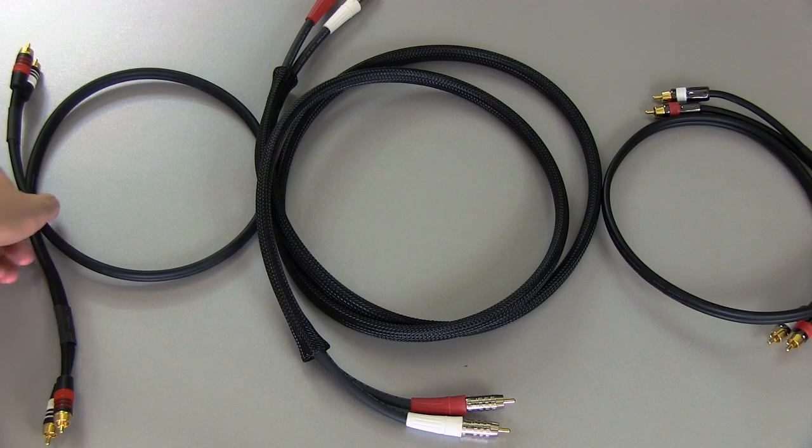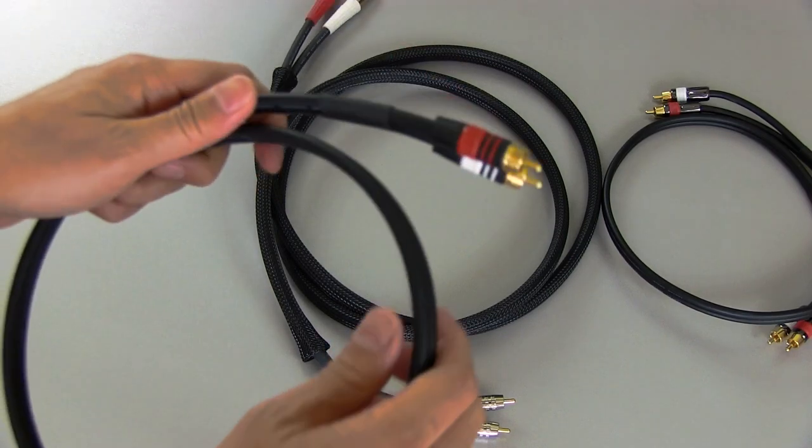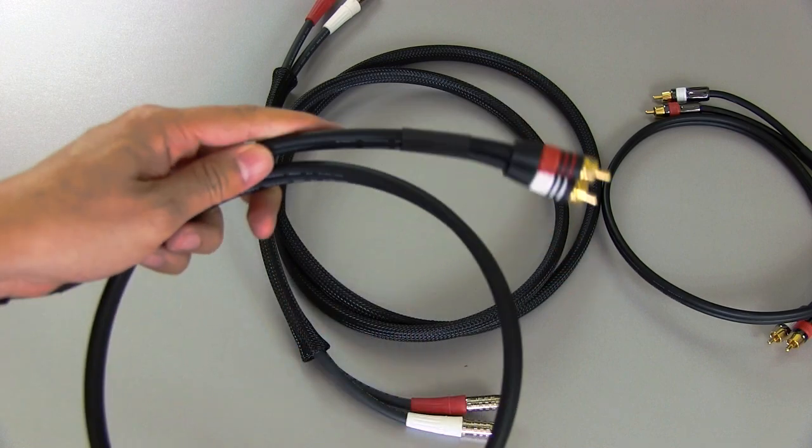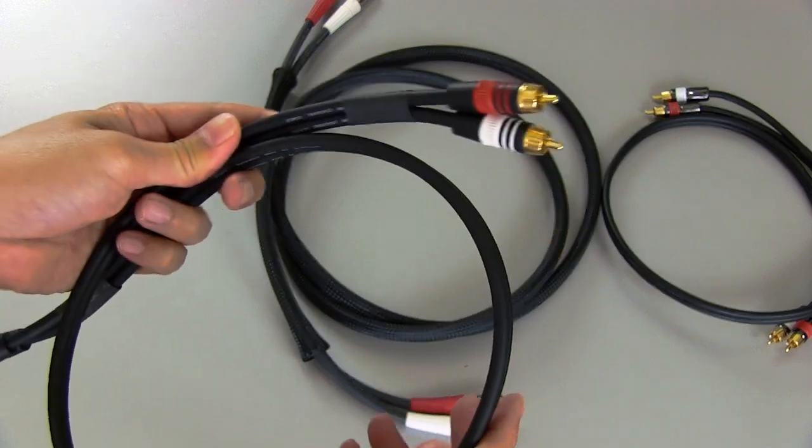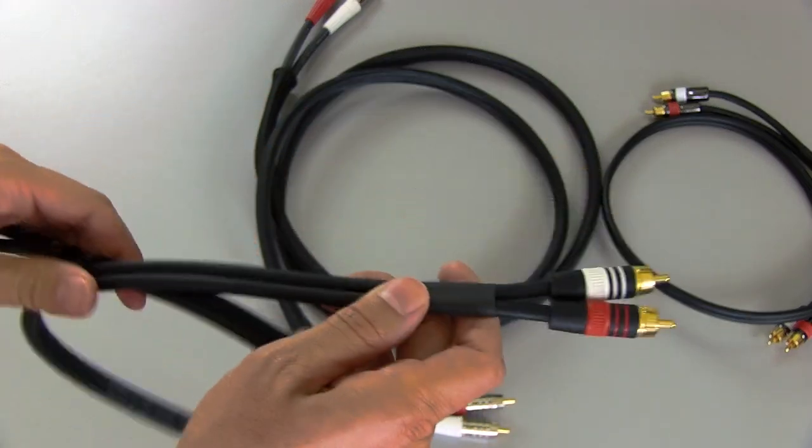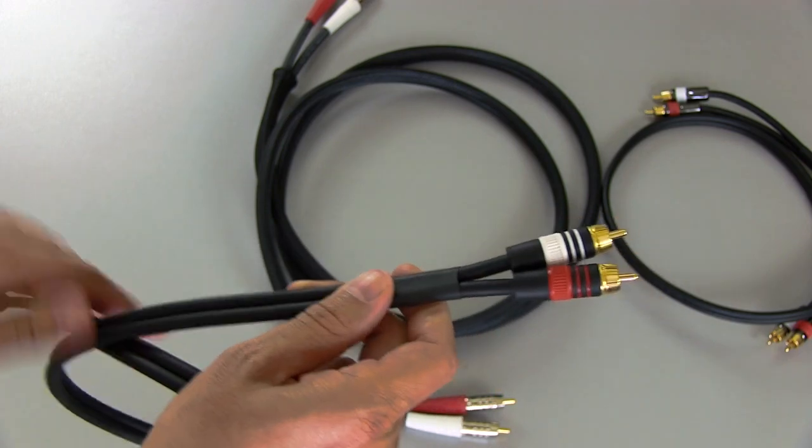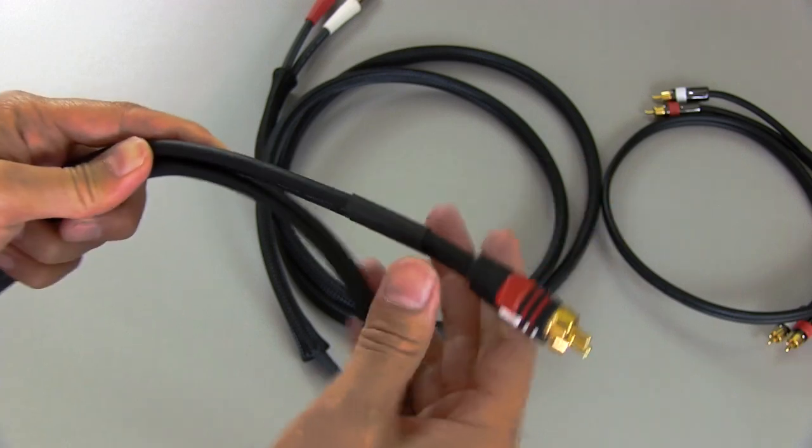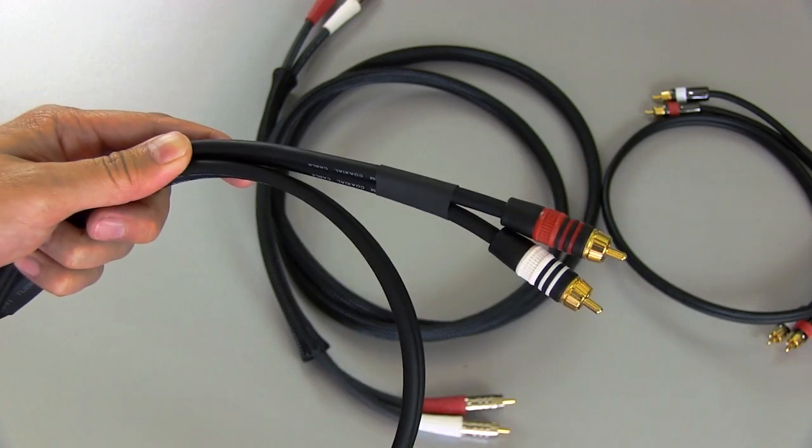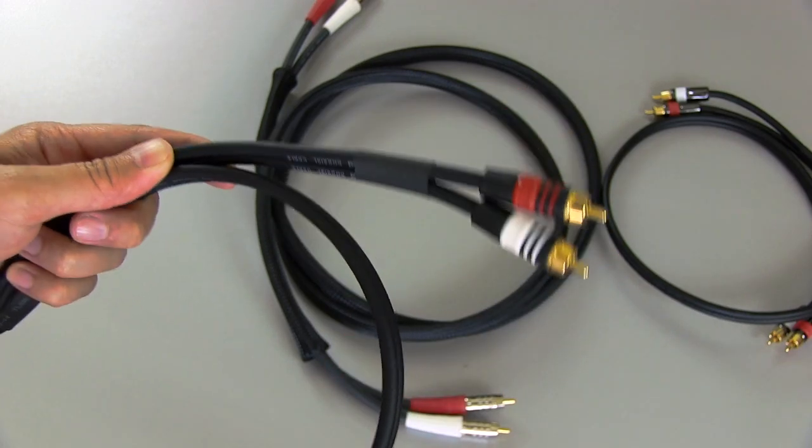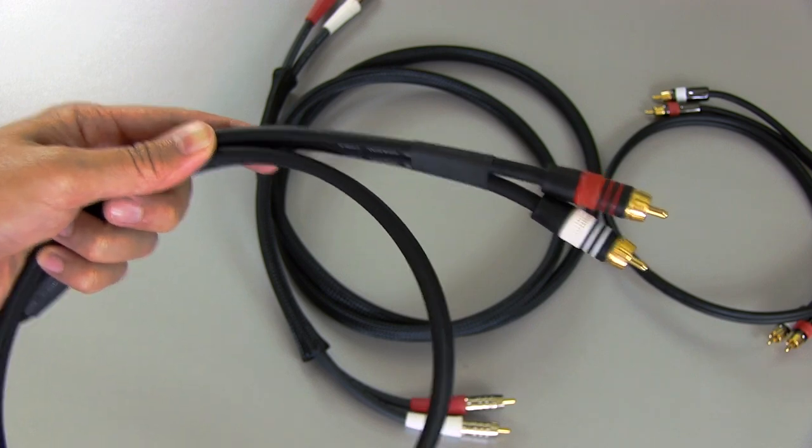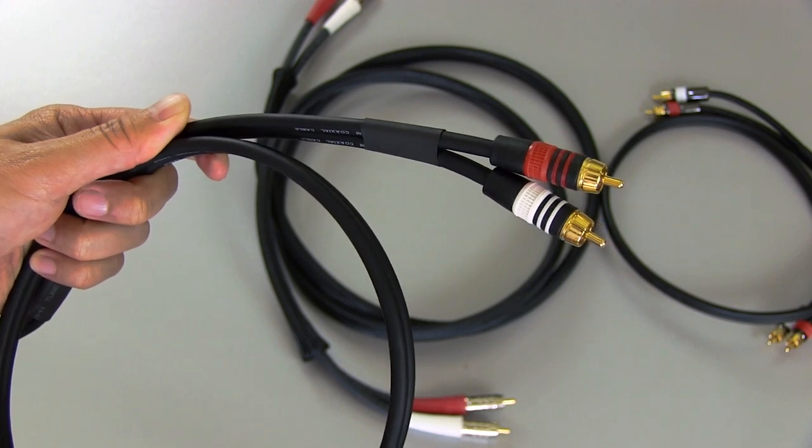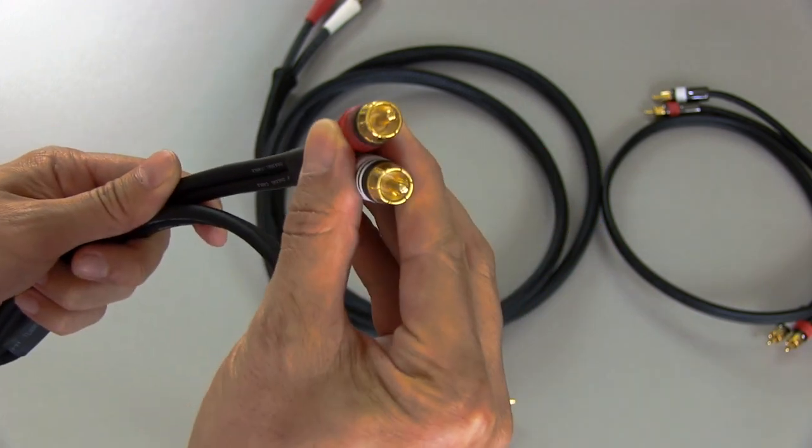So for short distances, a lot of people these days are using this cable here. This is a three foot RCA stereo cable by Monoprice from their premium line, and it's only a couple of dollars. It performs perfectly well at short distances and it's a pretty good bang for the buck. Now these are mass-produced cables made in China in big factories, so they're really nothing special, but for the price they're pretty good. It has this gold-plated connector and all that kind of stuff.